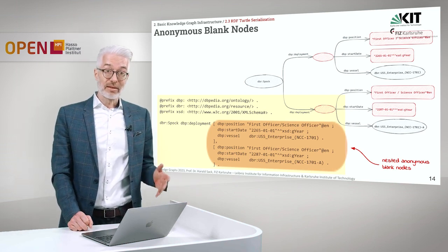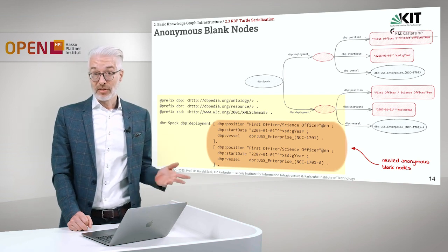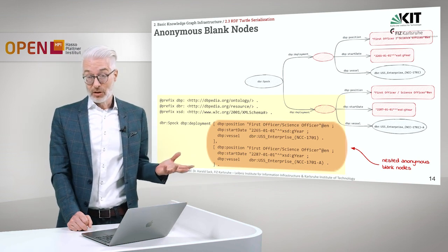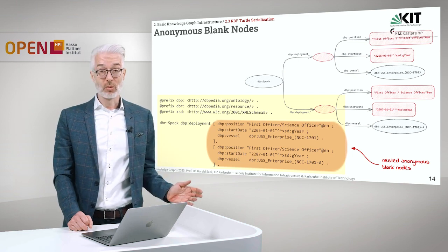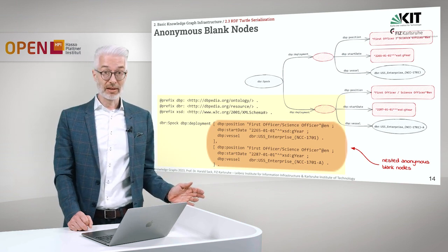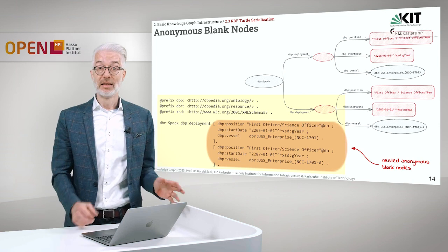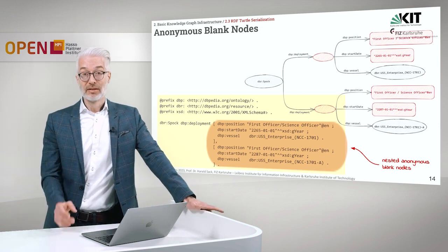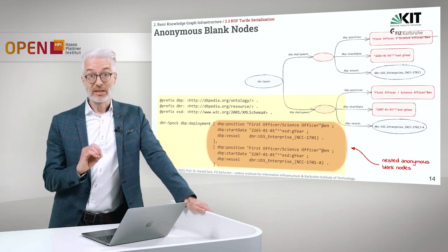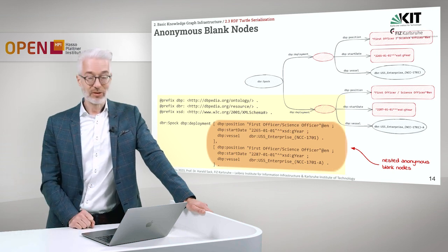When the anonymous node is at the object position, the expression becomes longer. We want to express that Mr. Spock is associated with two different deployments. Instead of writing two square brackets closed immediately, we open the square brackets and write inside them what belongs to that blank node — so everything inside is associated with that node as subject. So we write: Spock, deployment, then open a blank node containing position, start date, and vessel — and the same for the second deployment. This is called a nested anonymous blank node.